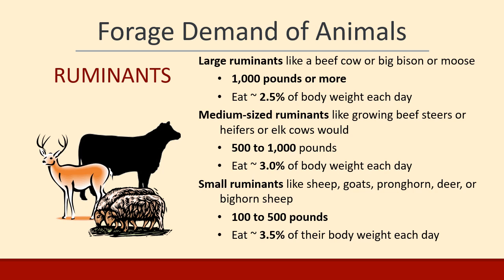Medium-sized animals eat more per day than large animals. A medium-sized ruminant — say a beef steer, heifer, elk cow, or deer — weighing 500 to 1,000 pounds would eat 3% of their body weight. And if you get even smaller ruminants like sheep, goats, deer, or bighorn sheep, ones that weigh 100 to 500 pounds, they eat even more as a percentage of body weight — 3.5%. So the numbers worth remembering are: 2.5% for animals 1,000 pounds or more, 3% for 500–1,000 pound animals, and 3.5% for 100–500 pound ruminants.